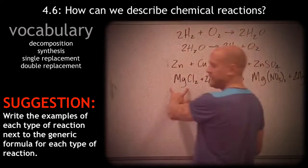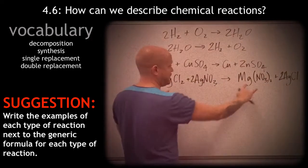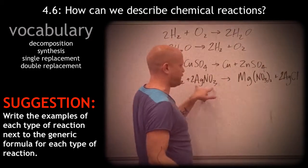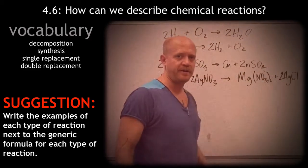Notice magnesium was with chlorine here. Magnesium is with nitrate here. Silver was with nitrate here. Silver was with chloride over here. They switch partners.